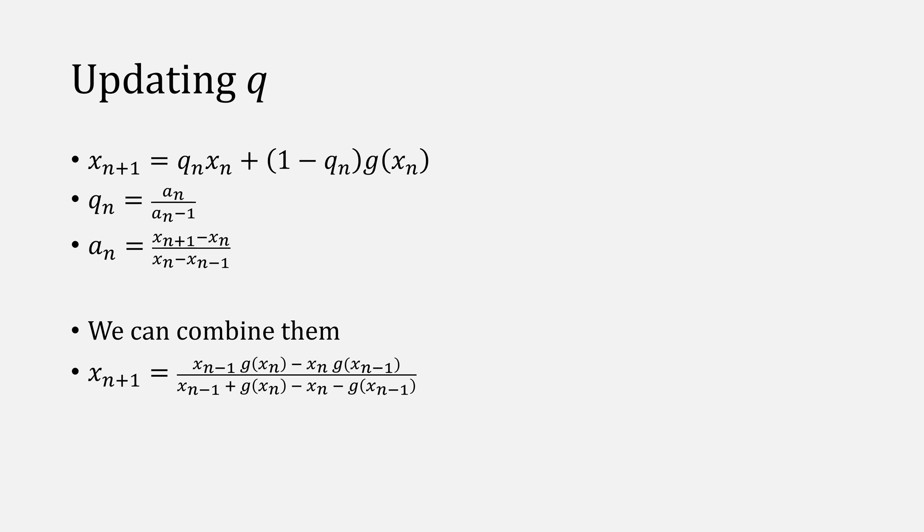You can also improve the convergence by updating q at every iteration of Wegstein's method, which means also updating a at every iteration. You could instead combine all three of these equations into this equation for Wegstein's. You will require one iteration of fixed point iteration to start with, though.